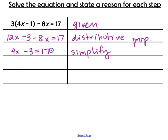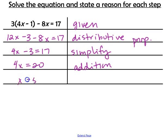Next, we add 3 to both sides to get 4x equals 20, using the addition property of equality. Then, dividing both sides by 4, we get x equals 5, using the division property of equality. This is how we solve an equation for the unknown variable and justify each step with the properties we know.